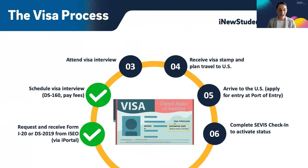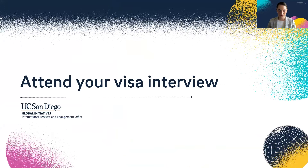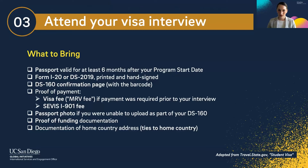All right, so that is how you actually schedule your visa interview. Let's go ahead and take a look at step three, which is attending your visa interview. When you go for your visa interview, there are several documents you will be required to bring. You will need to bring your passport — and your passport must be valid for six months after your program start date, which for most of you is September 23rd, 2024, the start of the fall 2024 quarter.